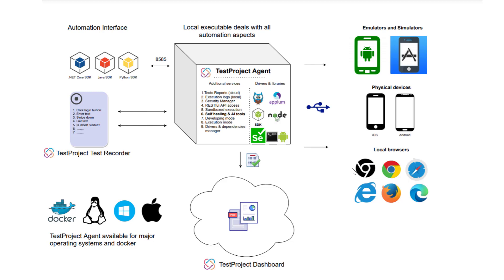Now, let's focus a bit on the roles the Agent is playing and how you can create your automation in multiple distinct ways. The TestProject Recorder, a web component, allows you to record scriptless automation. The TestProject Agent will allow you to interact with your browser or mobile device to record and create your automation. Everything is done locally, so if you have any resources that are available only locally, you'll be able to incorporate them into your automation.